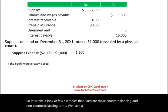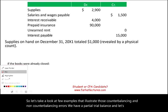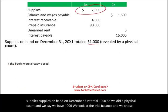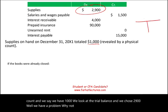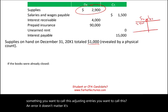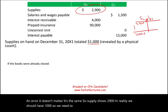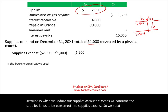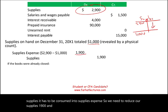We have a partial trial balance. Let's start with supplies. Supplies on hand on December 31st total $1,000 per physical count. We look at the trial balance and it shows $2,900. We need to reduce our supplies account by $1,900 — those supplies were consumed. So we debit supplies expense $1,900 and credit supplies $1,900. This is assuming we find out about this error before the books are closed.